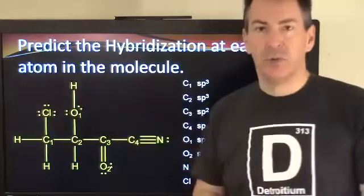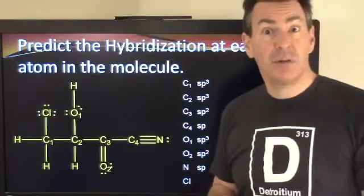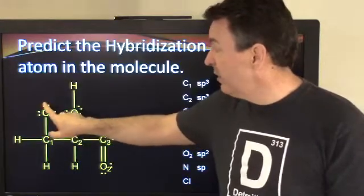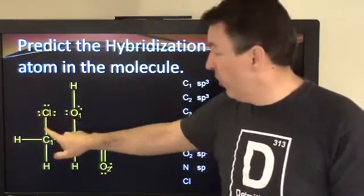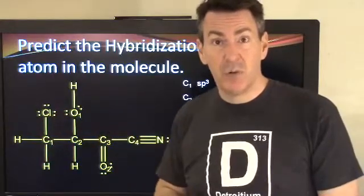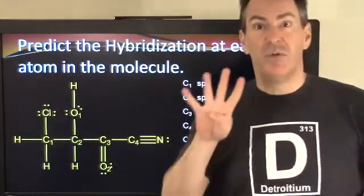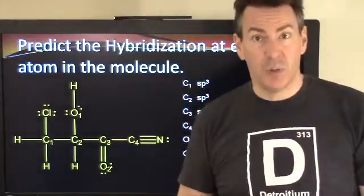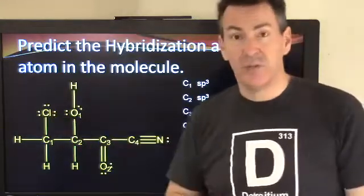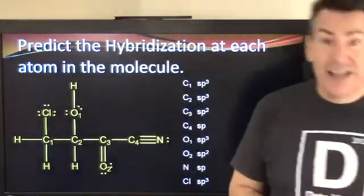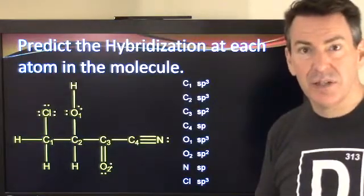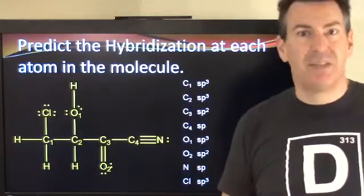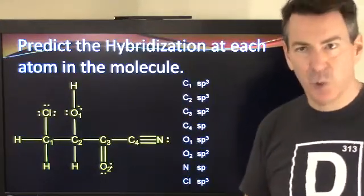Finally, there's a chlorine atom. How many total areas on the chlorine? It has the single bond to the carbon — that's one area — plus a lone pair here, a second lone pair, and a third lone pair, giving four total areas. All that matters is the total number of areas, so start with an S and one, two, three P orbitals. SP3 hybridization for the chlorine.